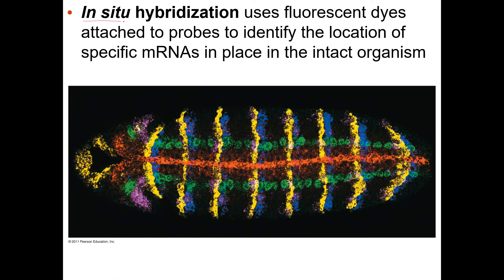This method — in situ hybridization — uses fluorescent dyes or probes to look at RNA that's expressed in a particular intact organism. Here's a fruit fly larvae where they used five different probes, each radio-labeled a different color — red, blue, green. They washed the whole thing with the red probe, but the probe only stuck to messenger RNA that was actually expressed, and it was only expressed in one region. So that's a gene that's only used in that part of the organism.